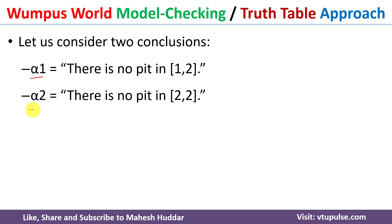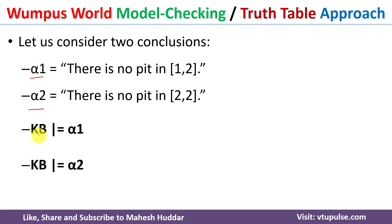Let us assume I have considered two queries or conclusions. Alpha one means there is no pit in 1,2. Similarly, alpha two means there is no pit in 2,2. I want to check whether these two statements are valid or not. To check whether alpha one is valid, we need to check if the knowledge base logically entails alpha one, and similarly for alpha two.